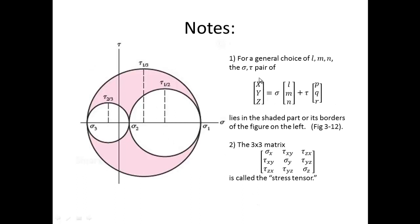Some notes. For a general choice of l, m, and n, the sigma tau pair in this relationship lies in the shaded part of this figure or its borders. This is figure 312 in your book. And remember that we talk about the maximum shear stress as being the radius of the biggest circle.